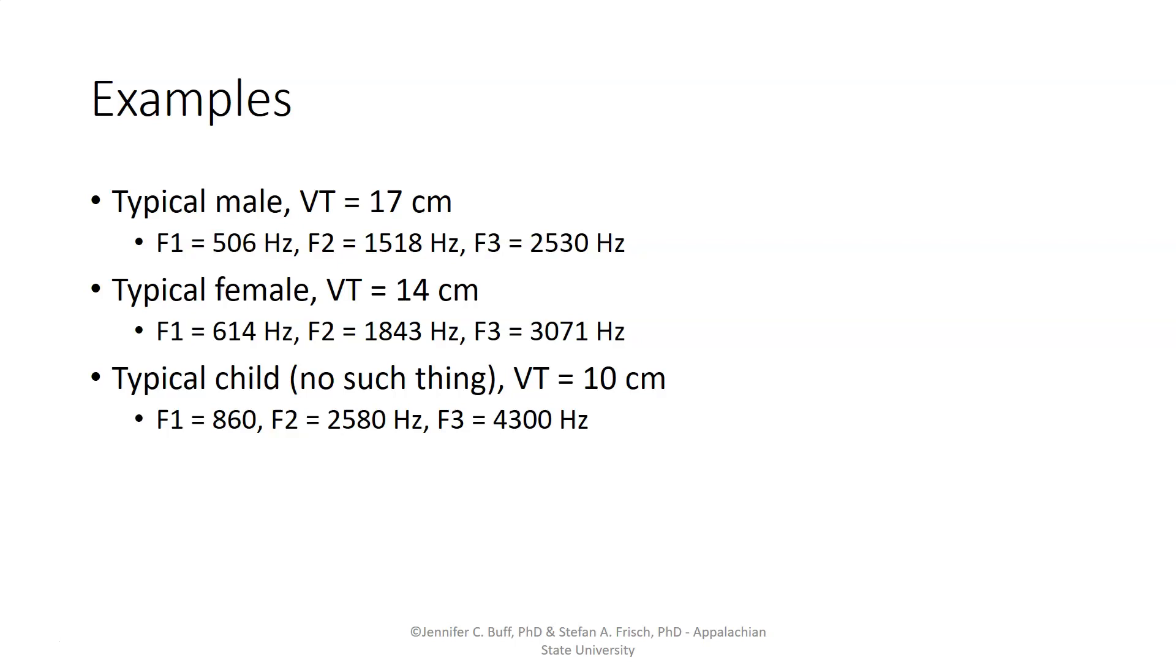For a supposed typical child, but of course children change quite a bit, but we could say for a small human with a vocal tract of 10 centimeters, we might have a first formant of 860 hertz. A second formant, three times that, at 2580. And a third formant, five times that, at 4300.